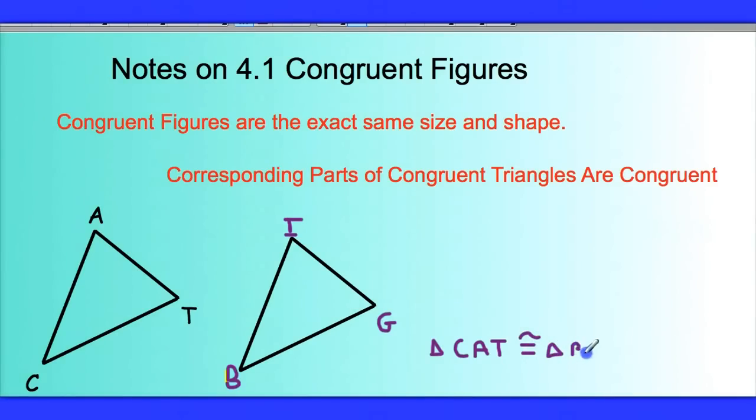So if I was to name the first triangle triangle C-A-T, or triangle CAT in a different order, I would need to make sure I name the other triangle in the same way. So for example, if I call this triangle triangle T-A-C, I would need to call this second triangle triangle G-I-B.